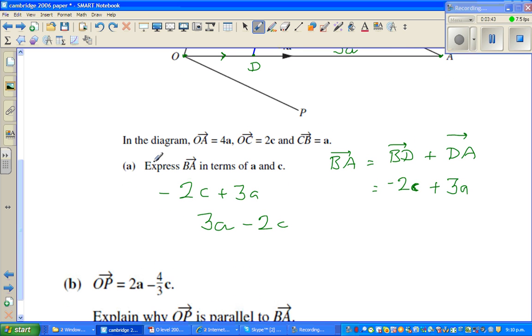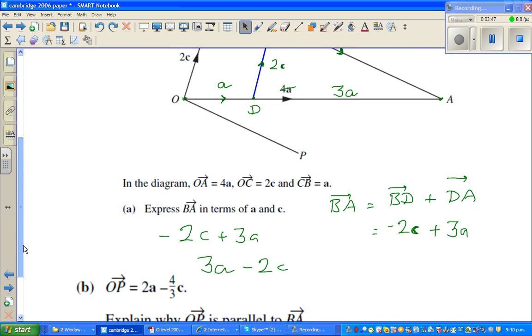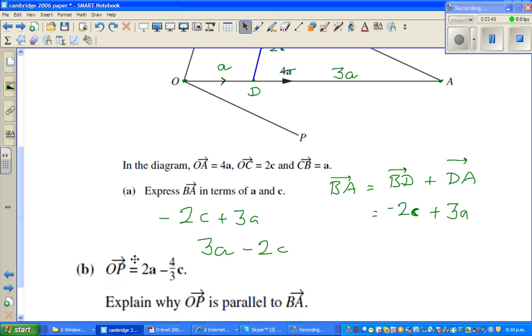Now the next question is, what they are saying is, bring this up so that you can see. Now OP, they are saying, is 2a minus 4 third of c. Let me use a different color, this vector is 2a minus 4/3 c that they have given. Explain why OP is parallel to BA.